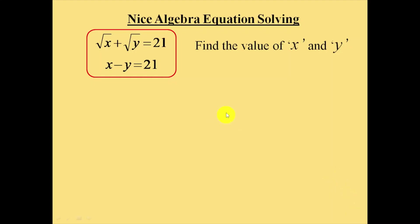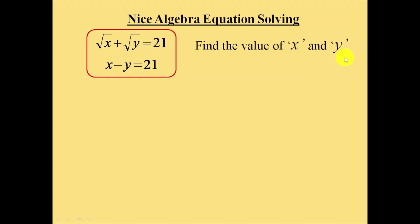Hello everyone. In this session we are going to find the value of x and y by using two equations: square root of x plus square root of y is equal to 21, and x minus y is equal to 21. We need to find the values of these two variables.